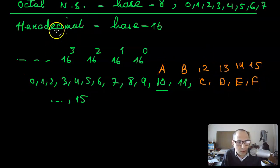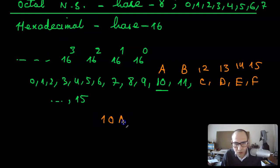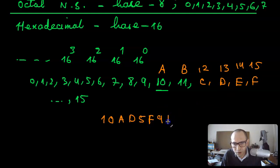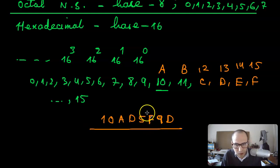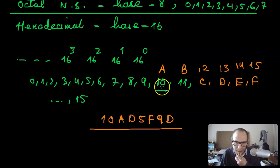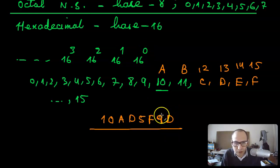A valid number in hexadecimal would be something like 10AD5F9D. The place values are 16 raised to power 0, 16 raised to power 1, 16 raised to power 2, 16 raised to power 3, 16 raised to power 4, 16 raised to power 5, 16 raised to power 6, and 16 raised to power 7. That's essentially how the hexadecimal number system works.